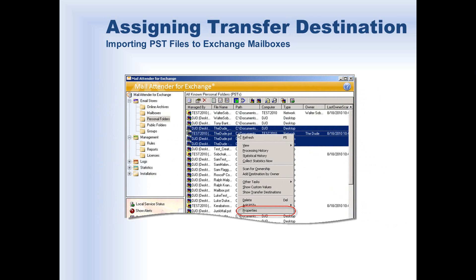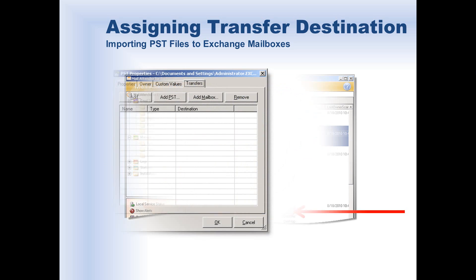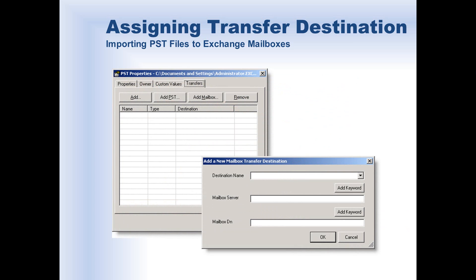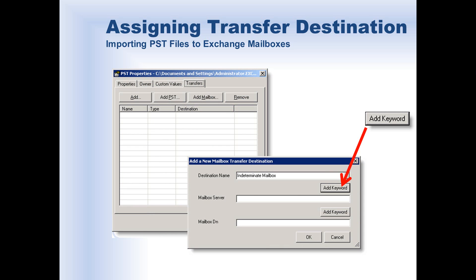First, select the PST files that you want to assign a transfer destination to, right-click, and select Properties from the pop-up menu. In the Properties dialog, select the Transfers tab and click Add Mailbox. This opens the Add a New Mailbox Transfer Destination window. Next, we'll need to provide a name — let's call this one Indeterminate Mailbox. Then click the Add Keyword button to populate the mailbox server field.